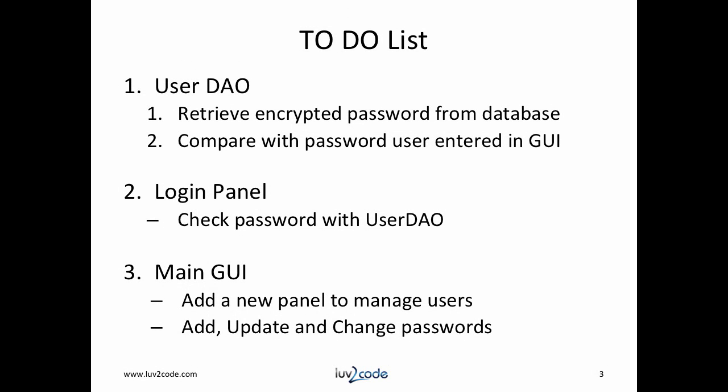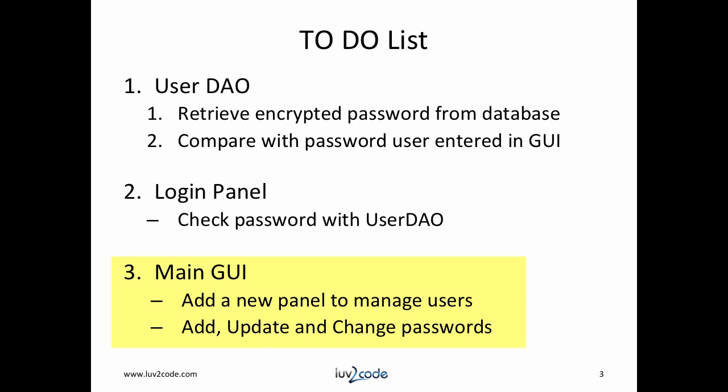In order to add all of this functionality, we need to set up a to-do list. The first thing we need to do is make some modifications to our User DAO — we'll need to retrieve the encrypted password from the database and compare it with the password entered by the user interface. Then we'll make modifications to our login panel so that when a user logs in, we compare that information with our DAO. Finally, we'll modify the main GUI to add a new tab for managing users so we can add, update, and change passwords for existing users.